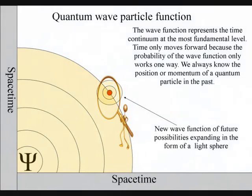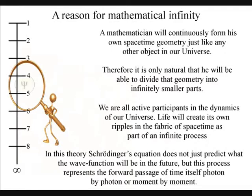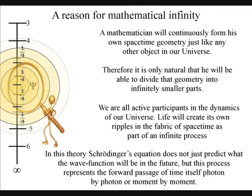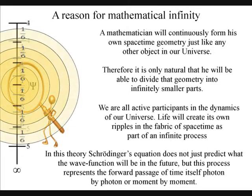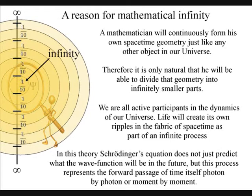This is part of a continuous process of change or creation. Therefore, we have a true infinity that can continuously be halved or divided over a period of time. A mathematician will be able to divide any number into infinitely smaller parts because of this process.